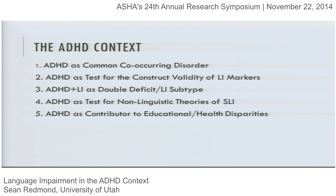That leads into the question of how to interpret these co-occurrence rates in the context of the possibility that we might have measurement error working its way through how we identify the co-occurrence rate. The next question will be what happens when a child has both ADHD and a language impairment, moving us into different models of co-morbidity and whether ADHD plus language impairment represents a subtype of language impairments.